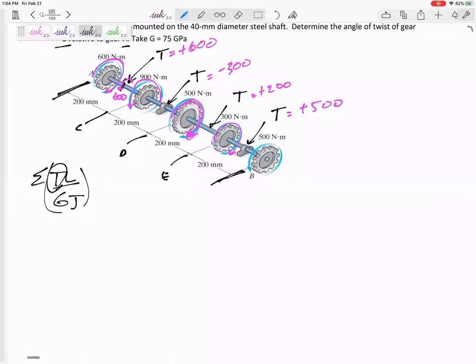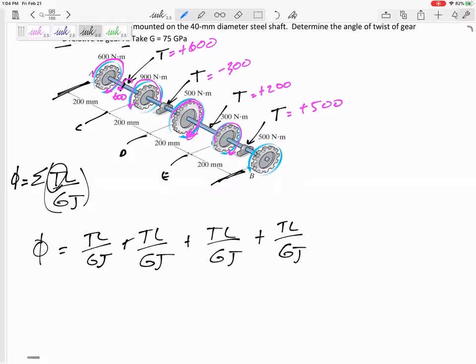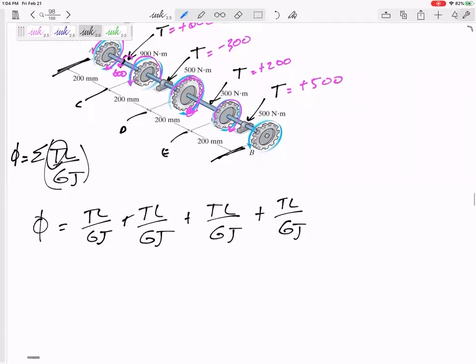Now we can find the angle of twist. Angle of twist would be TL over GJ of that first section, plus TL over GJ of that section, plus TL over GJ, plus TL over GJ. I think we have four sections. We can just add up the twist in every section.